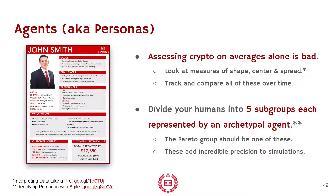And if you do that — specifically with data related to your humans — you will be able to create what are in economics called agents. In marketing and UX they're usually called personas. This image is an example of the Imperitas template. If you email me at luciano@imperitas.com, I'll happily send it to you. It's an interactive PDF — you just fill it in with your information. You should move beyond the average to understand who your token holders are, who your validators are, who your ambassadors and advisors are. Put them all into five groups, and these subgroups will be represented by some archetypal agent.